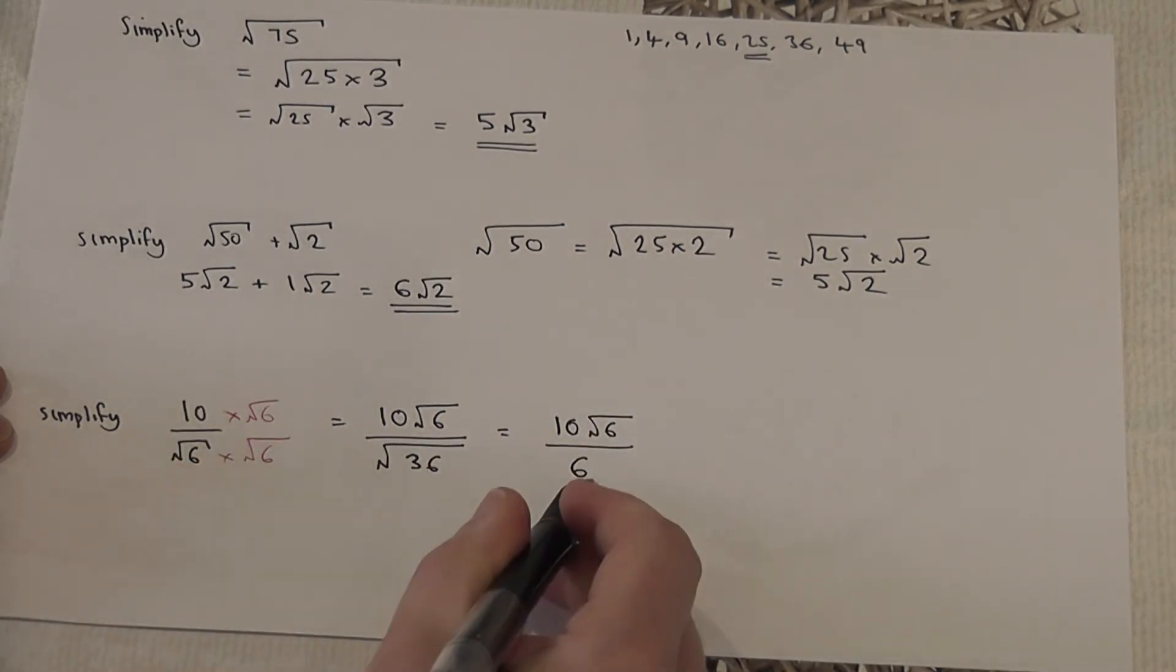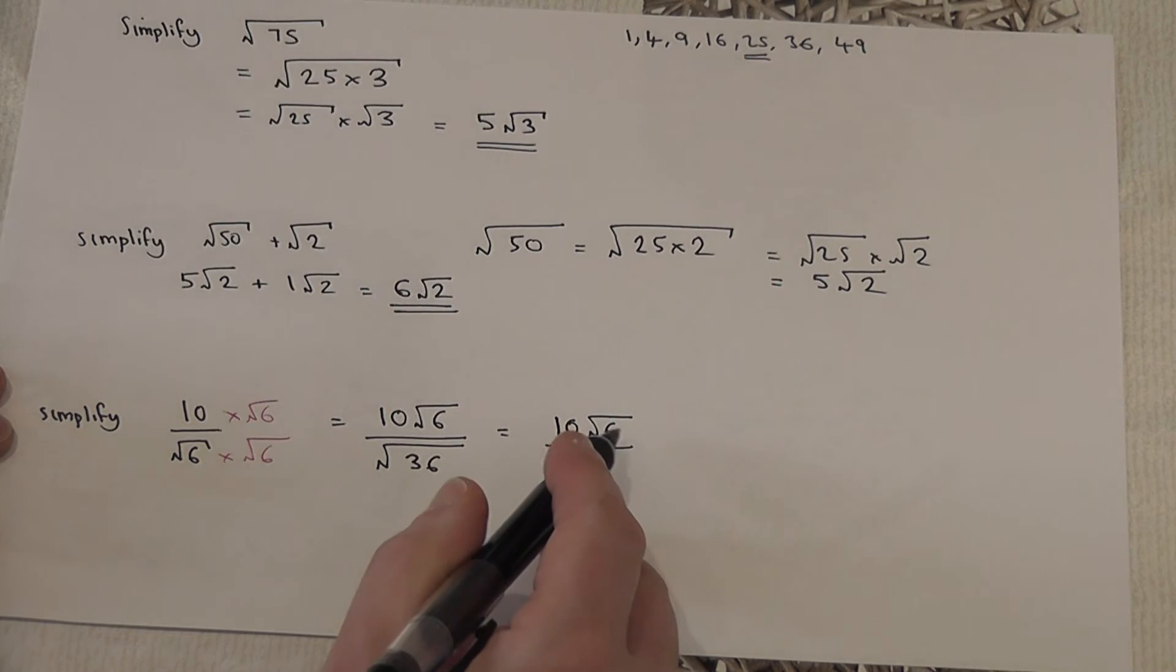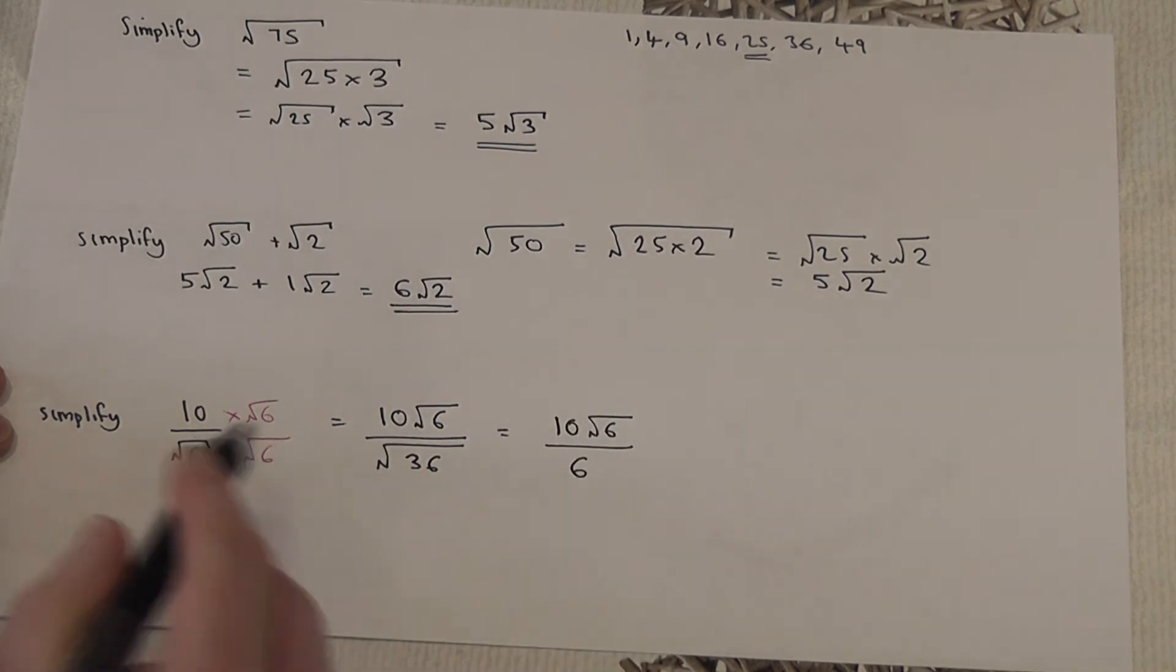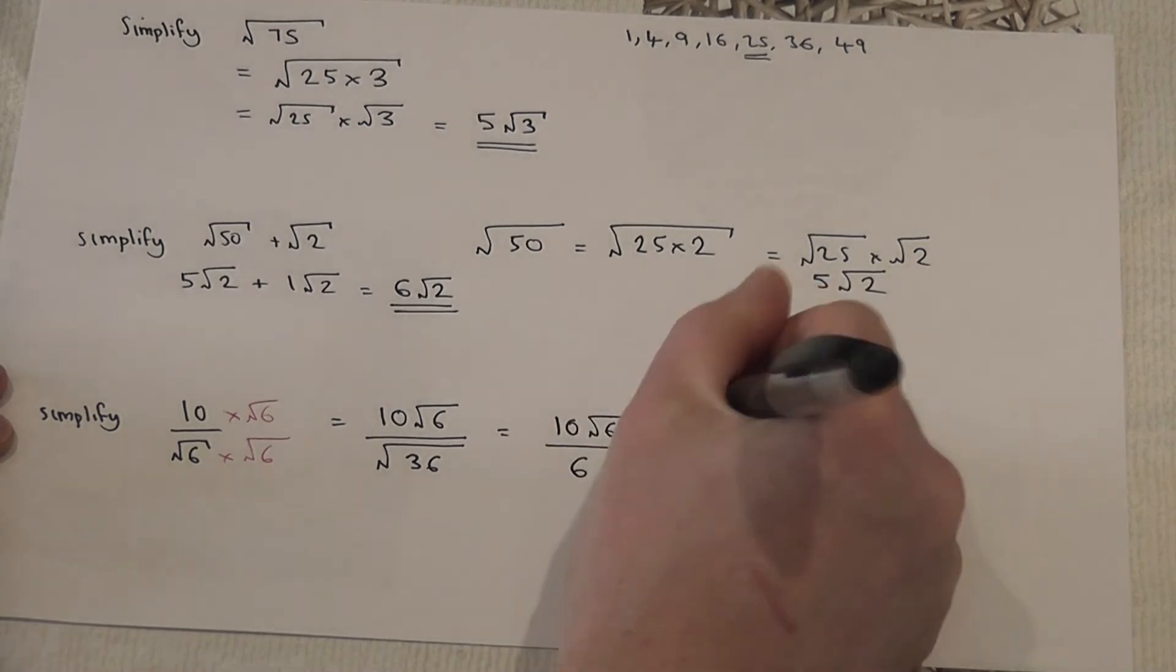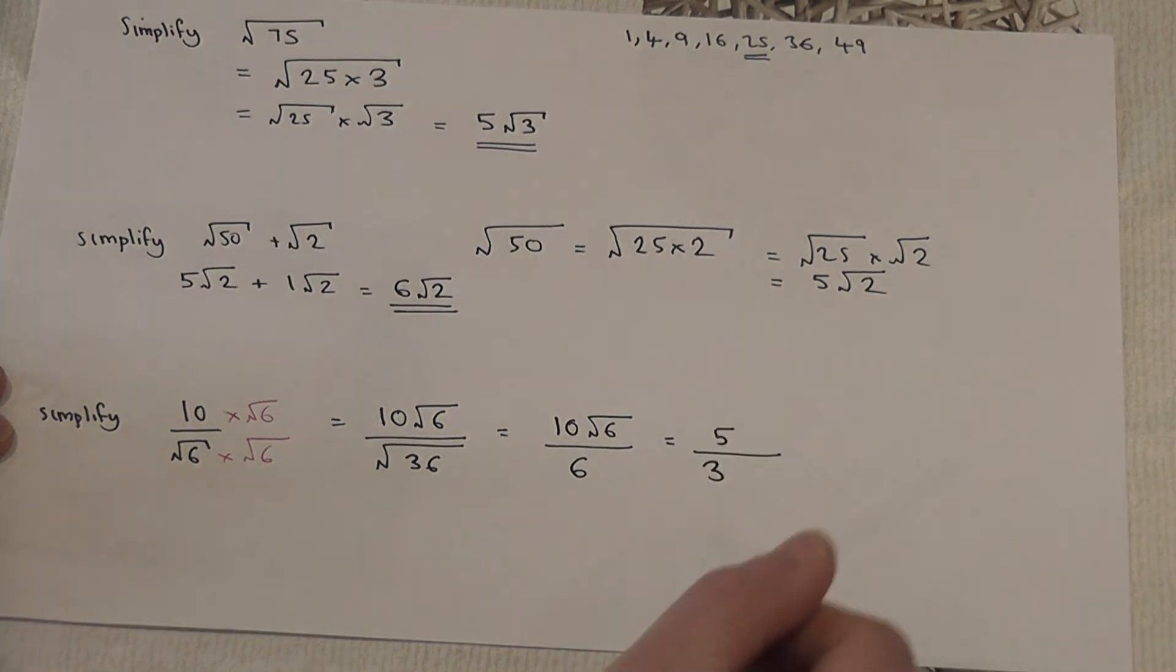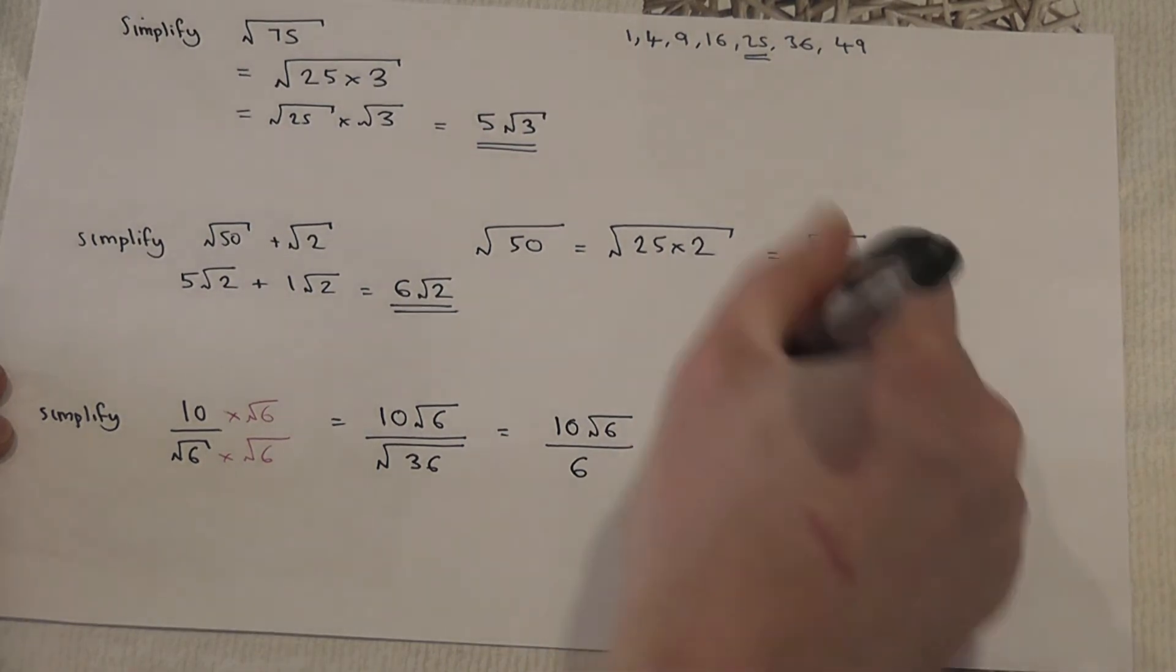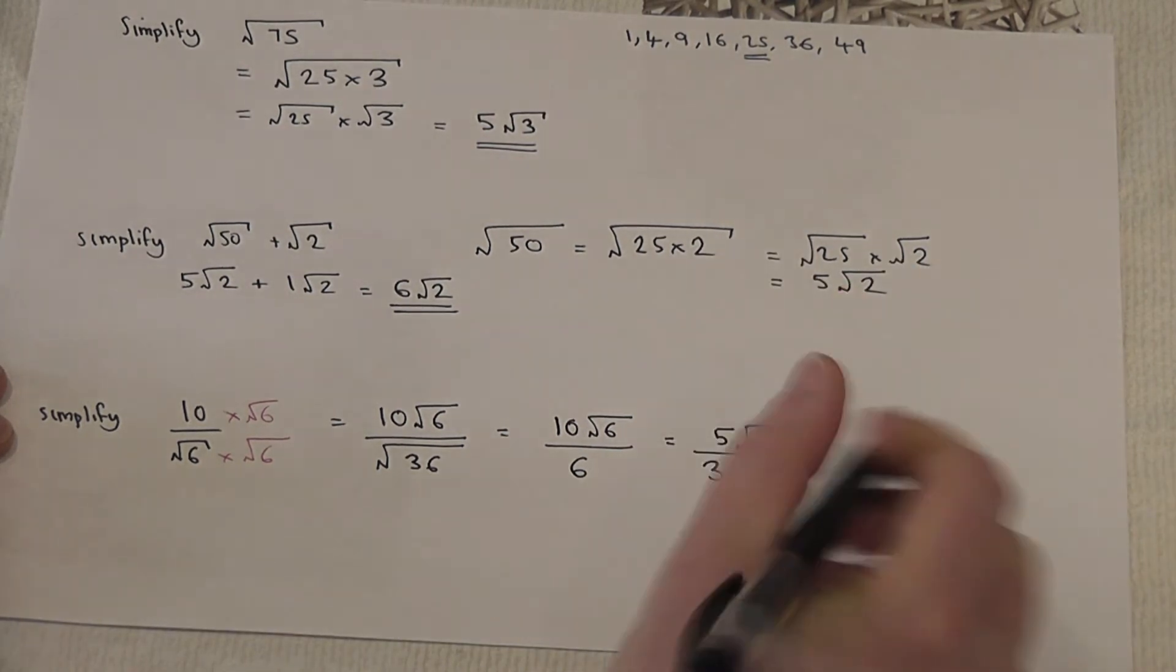So I've found an equivalent fraction where the square root is now on the top rather than the bottom. To finish off, I look at the fraction, and ten sixths cancel down to five thirds. So it becomes five root six divided by three.